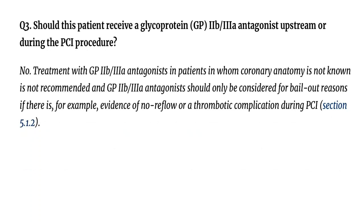Question 3. Should this patient receive a glycoprotein (GP) 2B/3A antagonist upstream or during the PCI procedure? No. Treatment with GP2B/3A antagonists in patients in whom coronary anatomy is not known is not recommended. GP2B/3A antagonists should only be considered for bailout reasons if there is, for example, evidence of no-reflow or a thrombotic complication during PCI. Section 5.1.2.